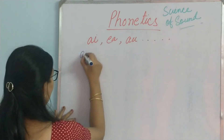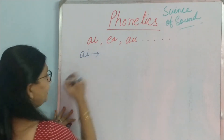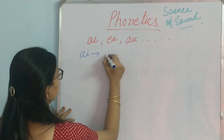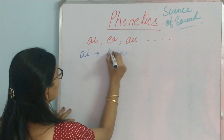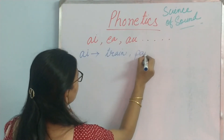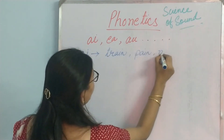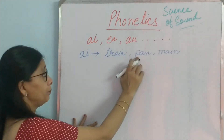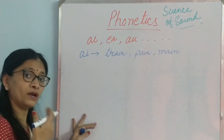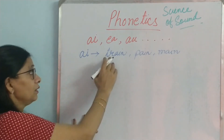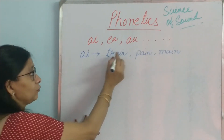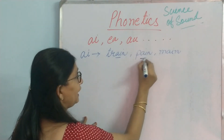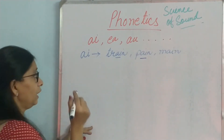First let us take AI. With AI, what are the words? It will be train, pain, main, and so on. So what is the sound that is coming out? An A sound, isn't it? Train — so if you just concentrate on AI, it is an A sound. Pain — A sound.